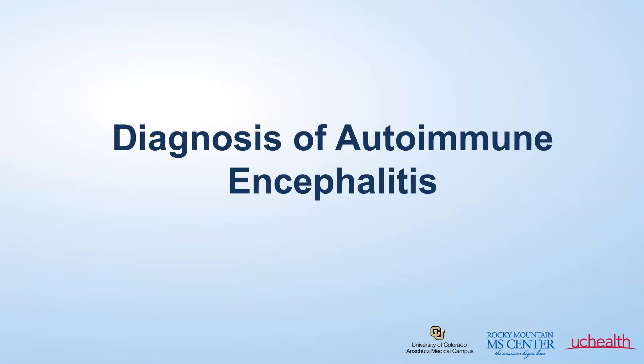So how do you make a diagnosis of autoimmune encephalitis? Sometimes we're lucky and we identify a pathogenic antibody such as NMDA receptor, and this defines and confirms the diagnosis. However, most of the time, we don't have a single spinal fluid test or blood test to make the diagnosis, and therefore we rely on the presentation of the patient and a series of tests to make the diagnosis.